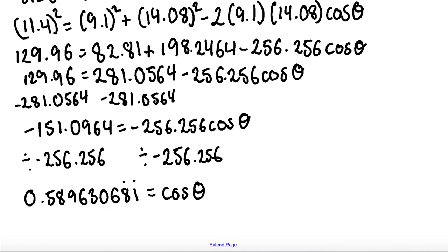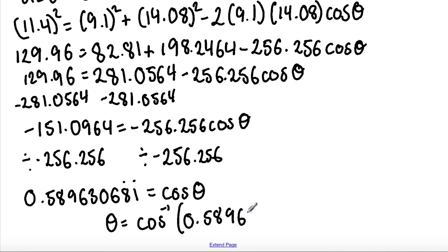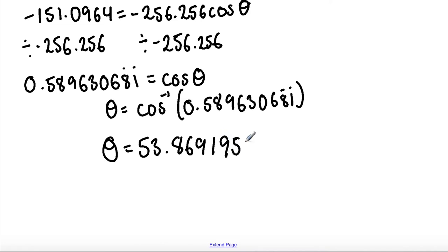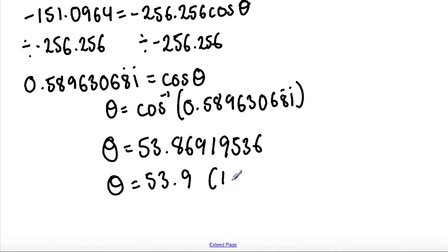To find the value of theta, we use the inverse of cos. So theta is equal to inverse cos of 0.589630681 (recurring). Therefore, theta is equal to 53.86919536 degrees. Rounding to one decimal place, theta equals 53.9 degrees (1 d.p.).